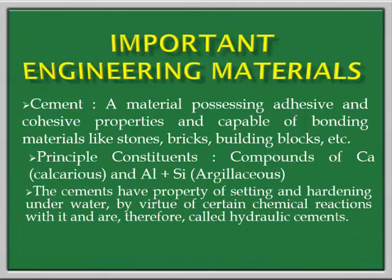Let's see what are the principal constituents of cement. First is compounds of calcium, i.e., calcareous compounds, and second is a combination of aluminium compounds and silicon compounds. Collectively they are called argillaceous materials. Cement has the property of setting and hardening when it reacts with water by virtue of certain chemical reactions.